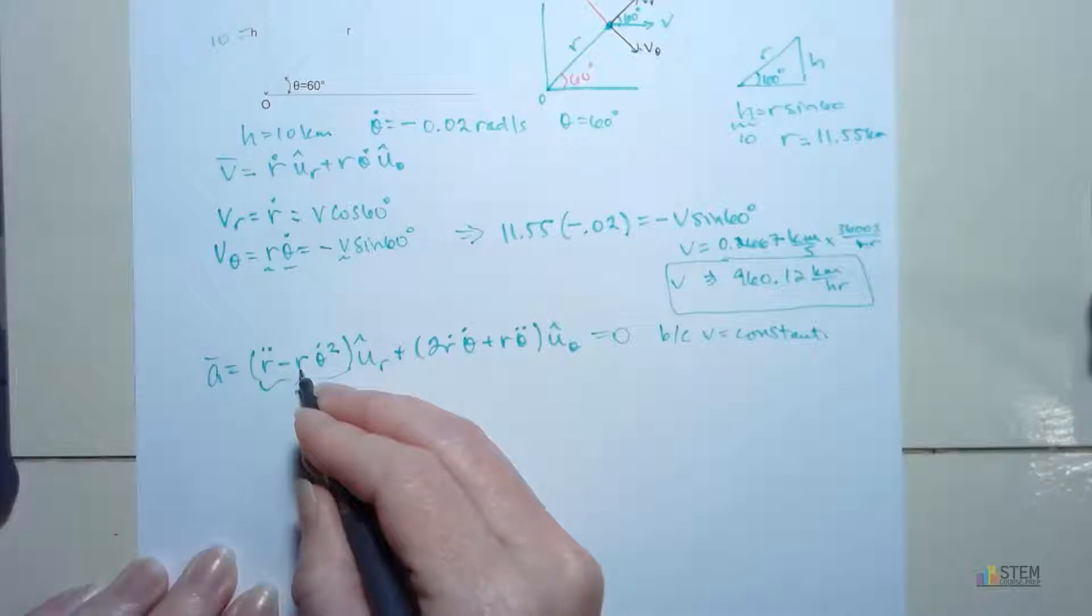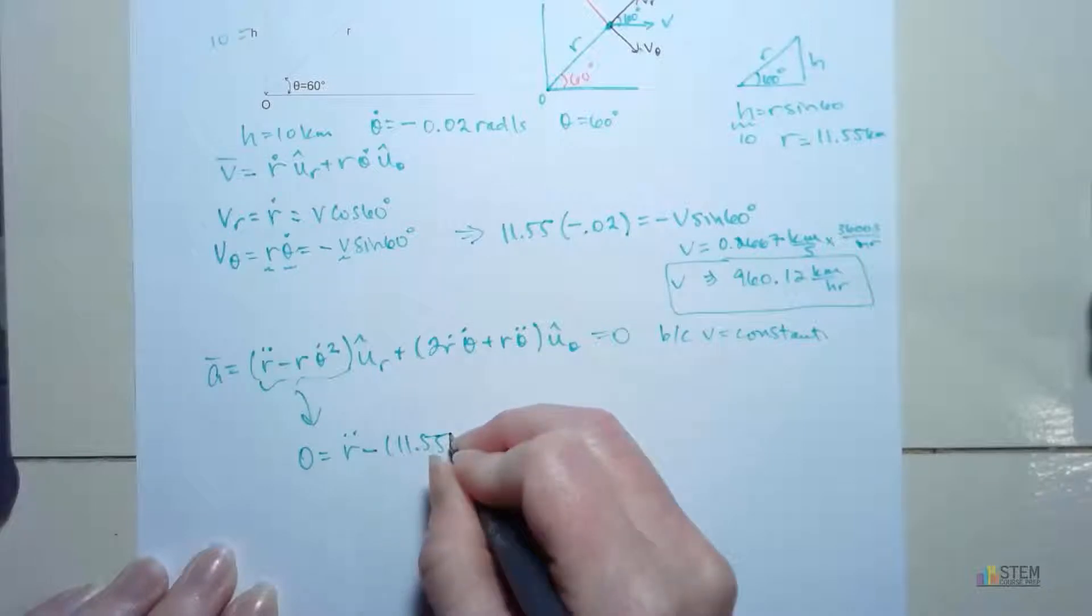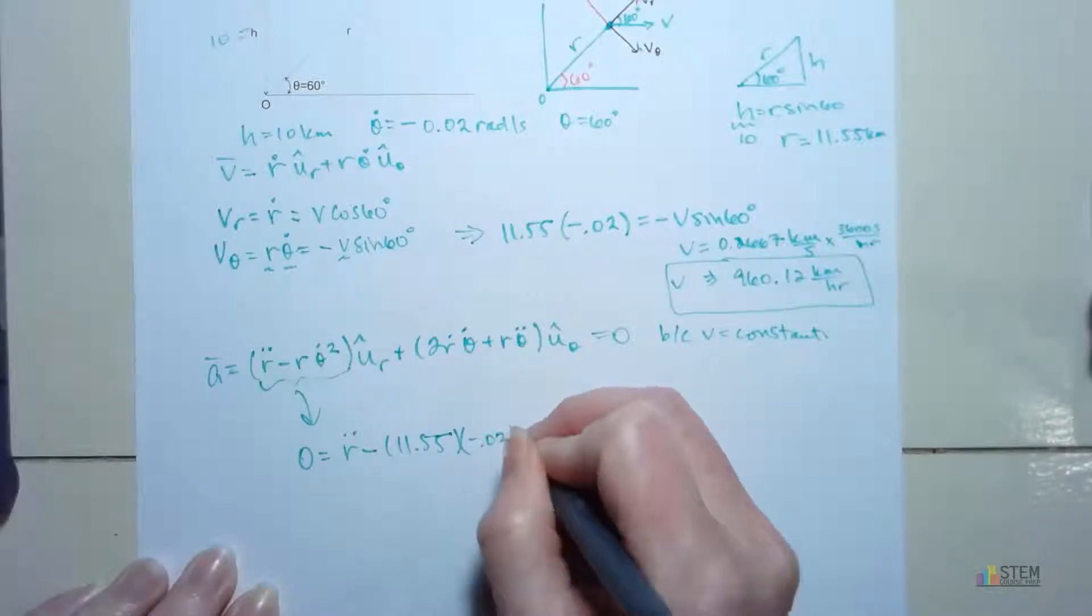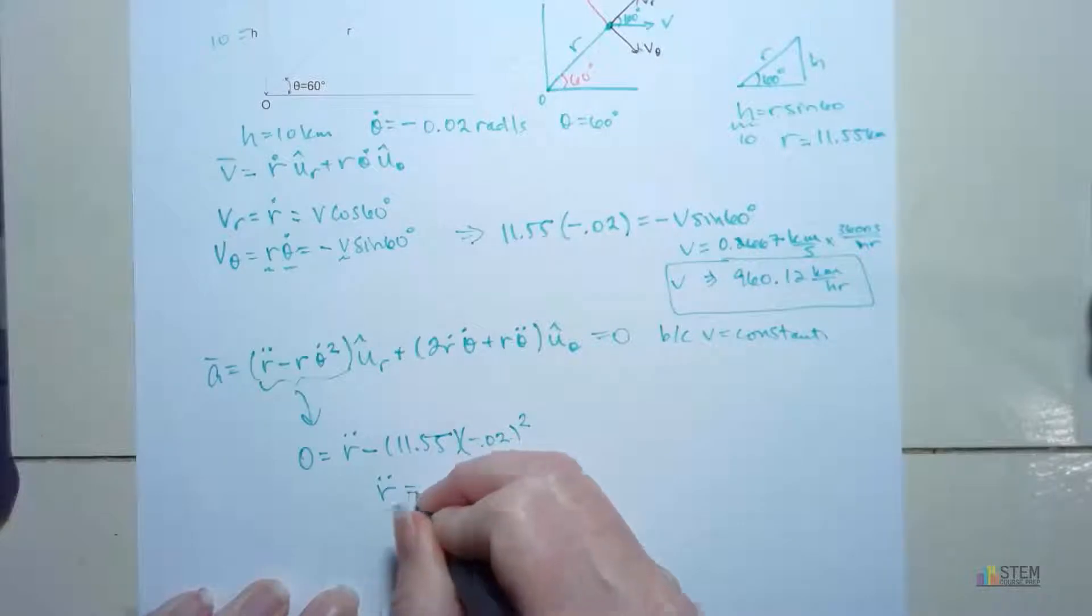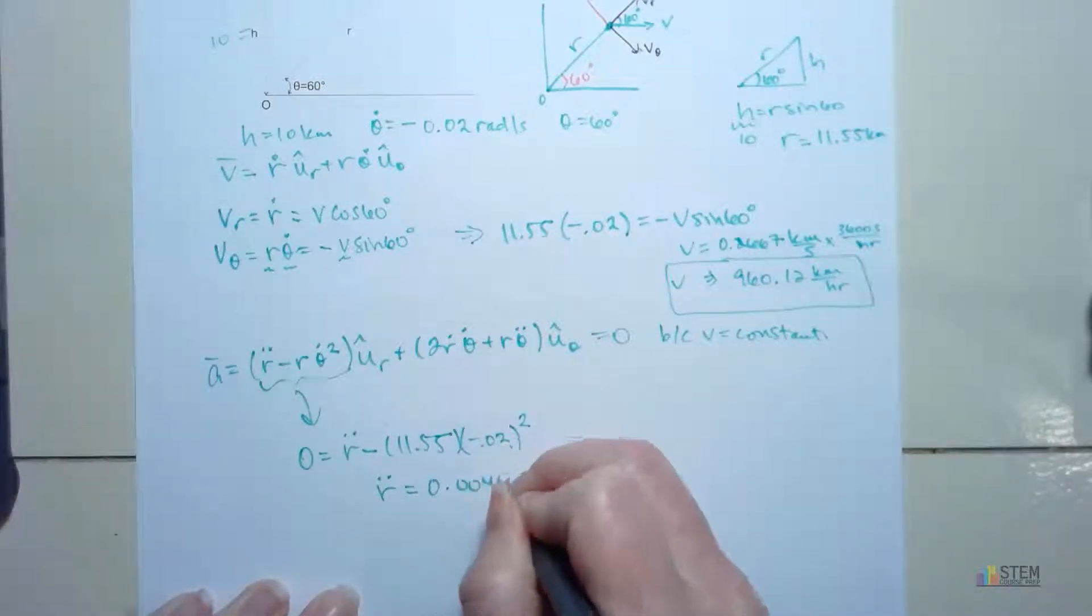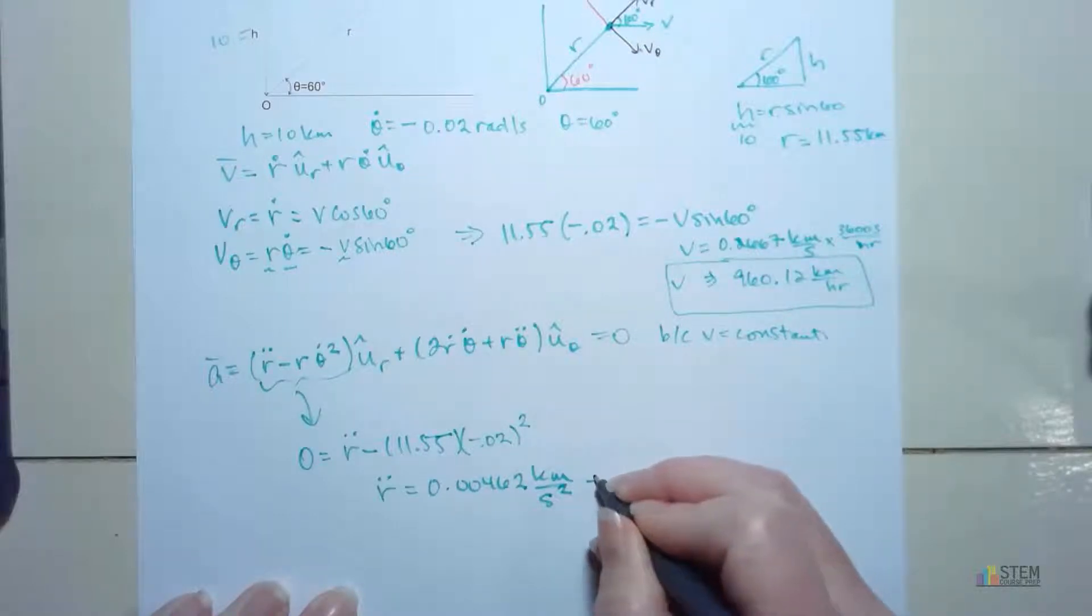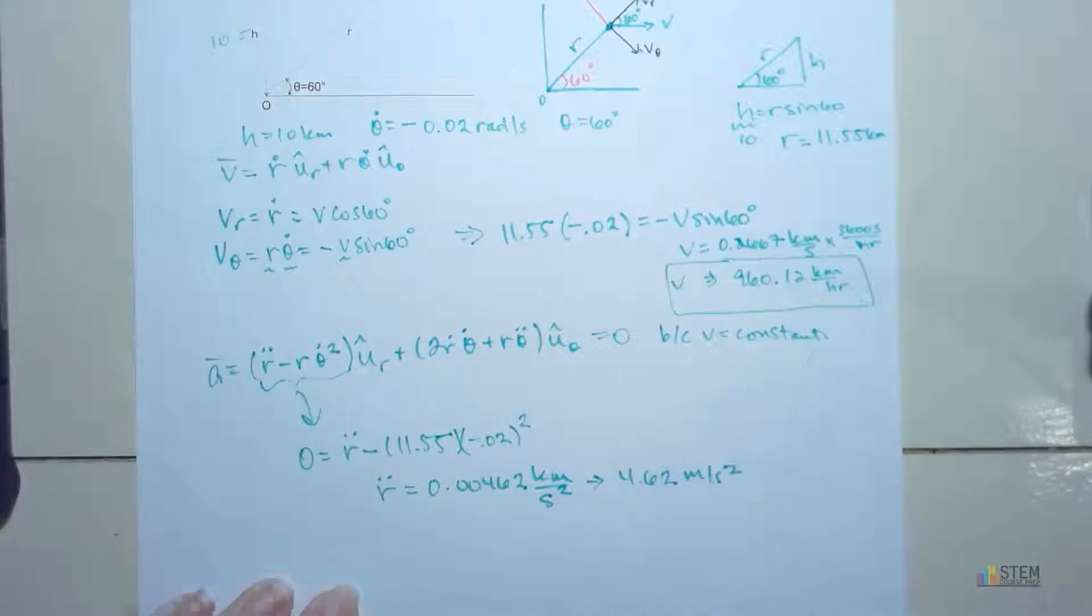So again, this term has to be equal to zero because acceleration is zero. So we can say zero equals R double dot minus R. Well, we already know what R is. 11.55. So we've got that. Times theta dot squared. So you're going to have that negative 0.02. Square it. And now if you look, your only unknown here is R double dot, which is what we want. So now we just find R double dot. And that is 0.00462 kilometers per second squared. And if you want, you can convert that over to meters, which would be 4.62 meters per second squared.